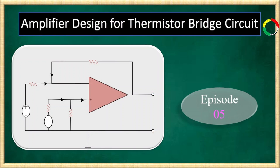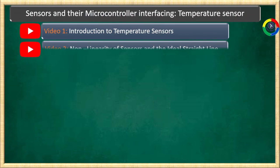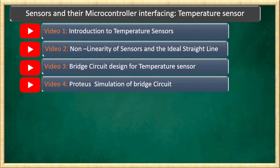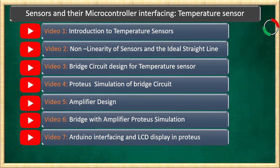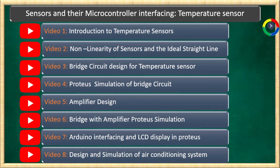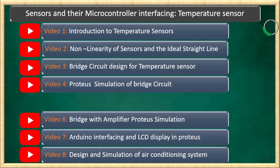Welcome, everyone. This is the fifth episode in our sensors and their microcontroller interfacing video series. We are following a project-based design workflow. To understand the complete workflow, you can watch the whole playlist — I will put the playlist link in the video description below. Here in this video, I will be discussing the design of an amplifier circuit for our thermistor and bringing the output voltage to an appropriate range.